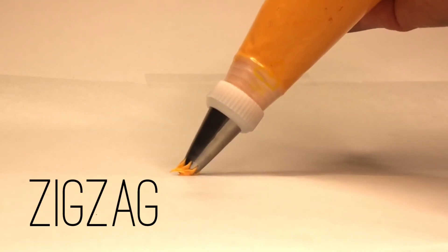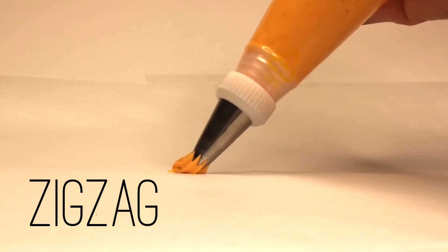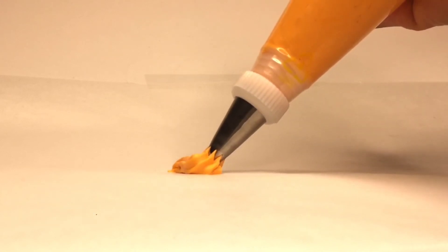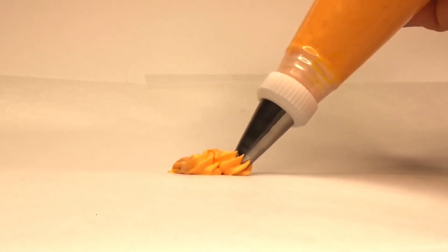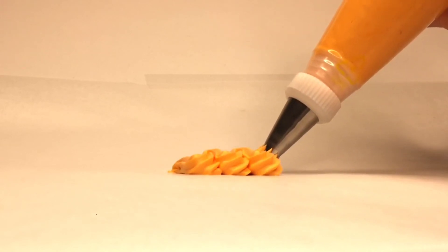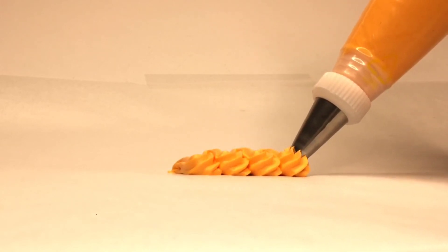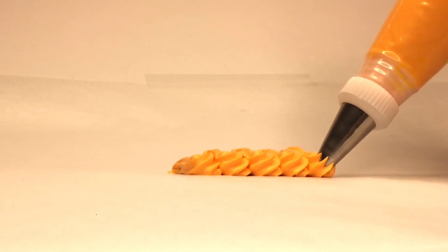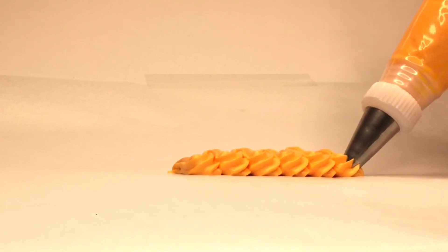Our final technique is the zigzag. Now we hold our bag at a 45 degree angle and we squeeze with nice even pressure and move our tip toward ourself, away from ourself, toward ourself, away from ourself, all while moving our tip. Now let's take a look at this technique from above.